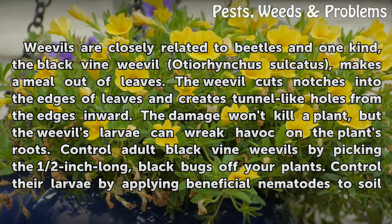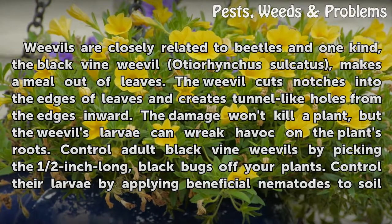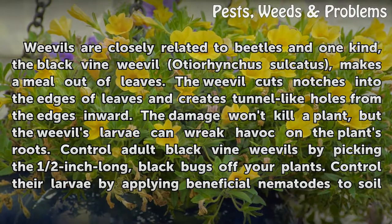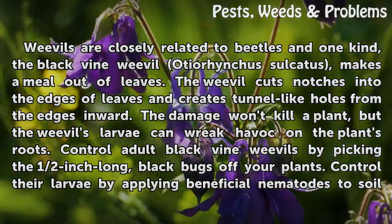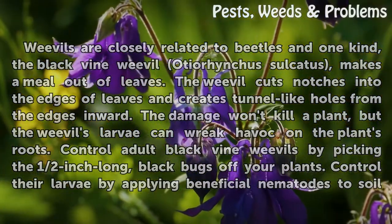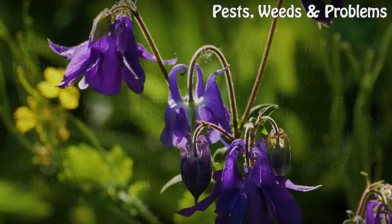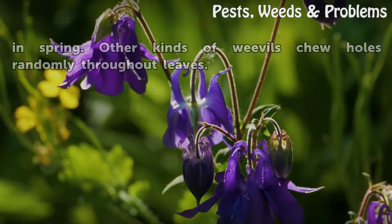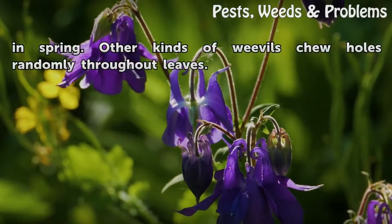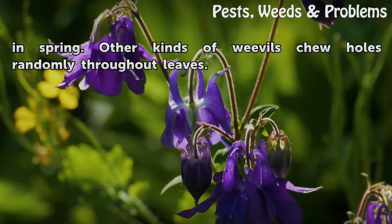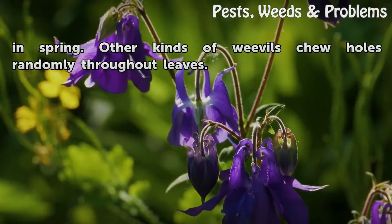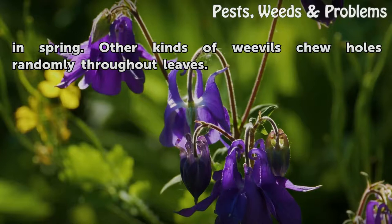Control adult Black Vine Weevils by picking the half-inch long, black bugs off your plants. Control their larvae by applying beneficial nematodes to soil in spring. Other kinds of weevils chew holes randomly throughout leaves.